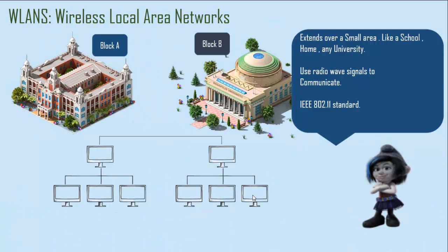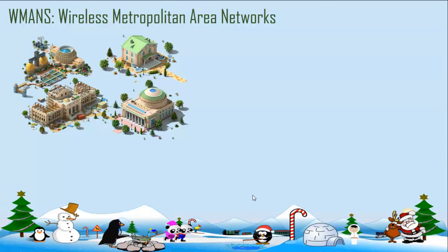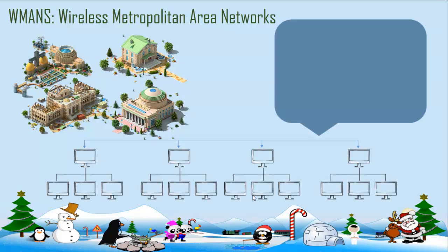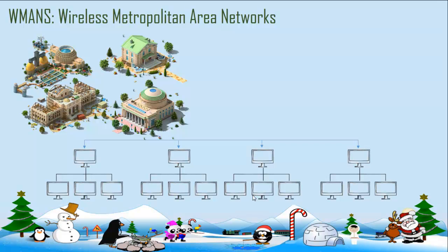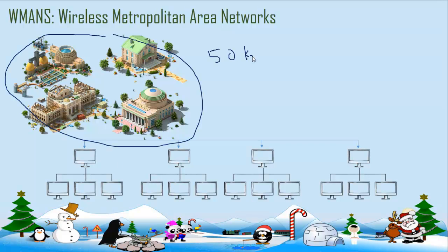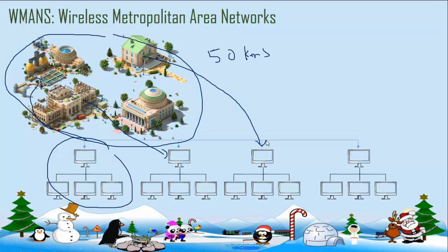IEEE 802.11 is marketed as Wi-Fi. Then we have wireless metropolitan area networks, which some confuse with wireless wide area networks, but it is something in between WLAN and WWAN. It doesn't extend much more than 30 to 40 kilometers. You can think of it as many buildings, each with its own LAN, connected together — a repetition of many LANs connected across roughly 50 kilometers.